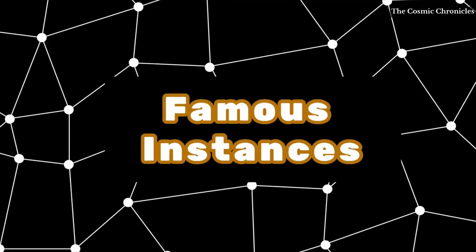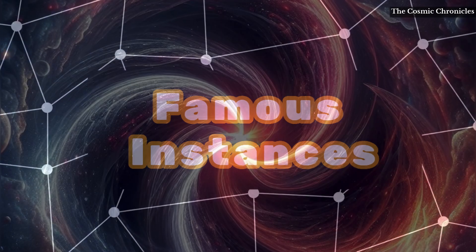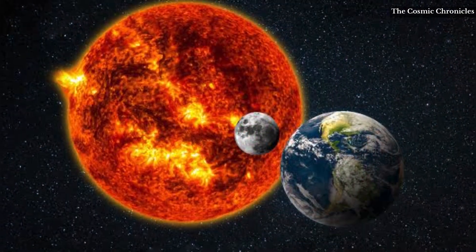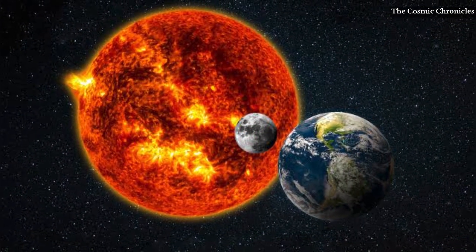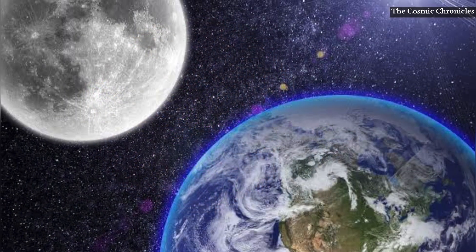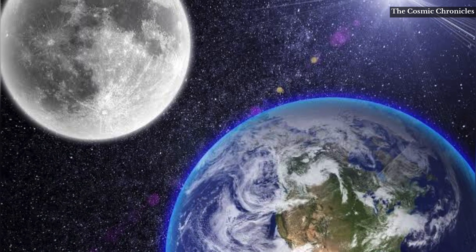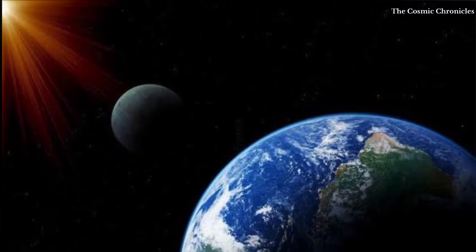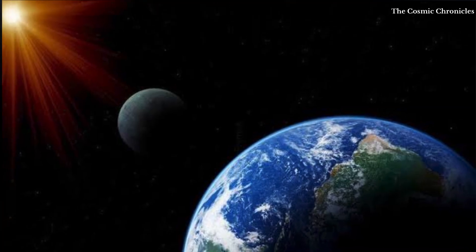Famous Instances: 1. Earth-Moon-Sun System. The interactions between the Earth, Moon, and Sun form a three-body problem. While the Earth and Moon form a relatively stable two-body system, the gravitational influence of the Sun adds complexity to the Moon's motion, causing perturbations—slight changes—in its orbit.